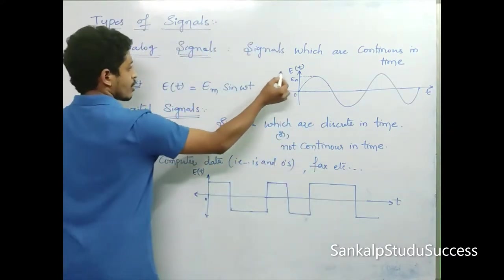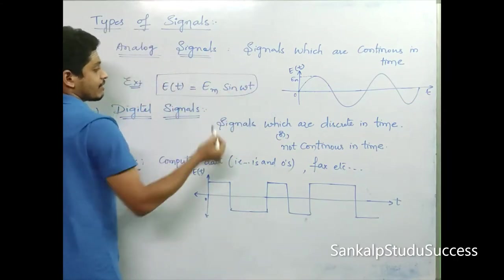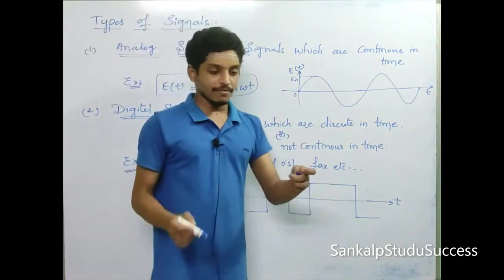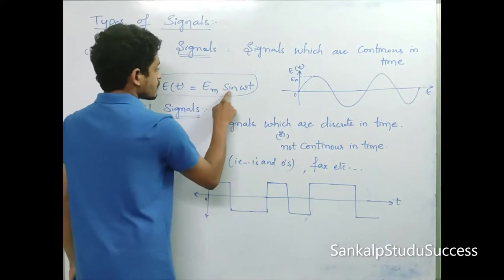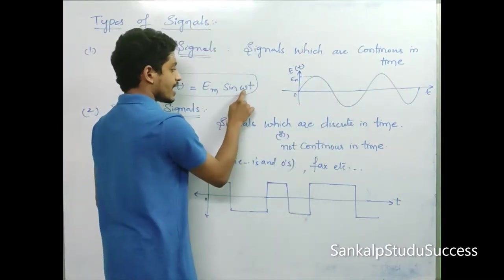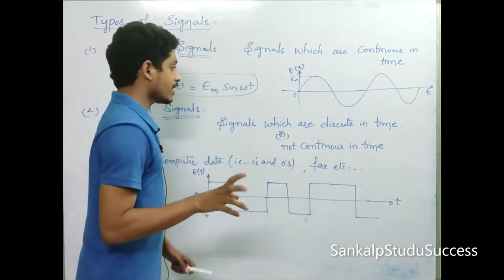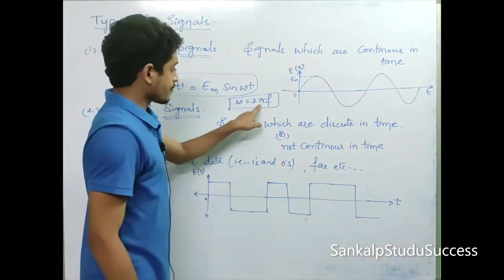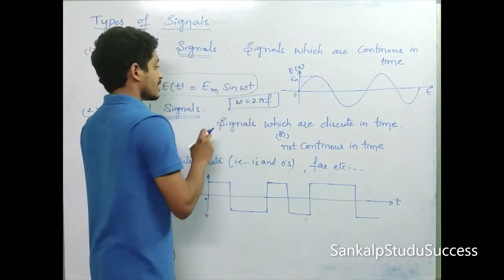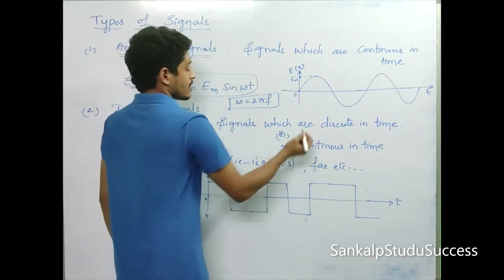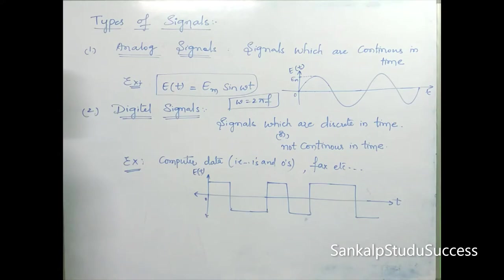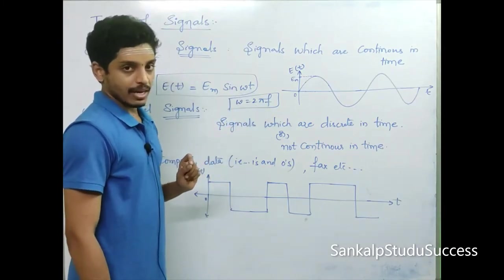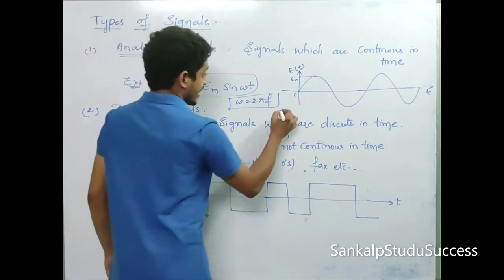We represent analog signals in graphical format as E(t), a signal as a function of time. The expression is E(t) = Em sin(ωt), where the signal is in the form of a sinusoidal wave. Here, ω is angular frequency equal to 2πf. 2π is 360 degrees. F is the fundamental frequency, T is the time period, and Em is the amplitude of the wave.